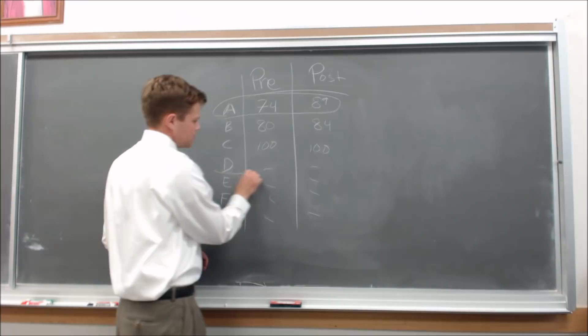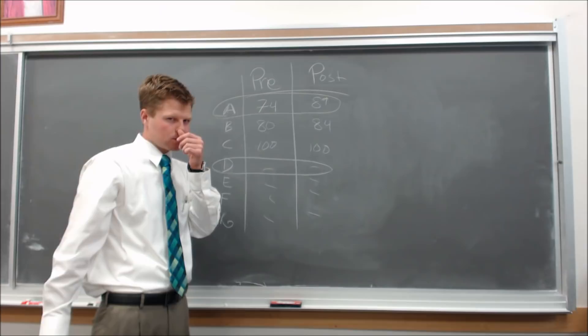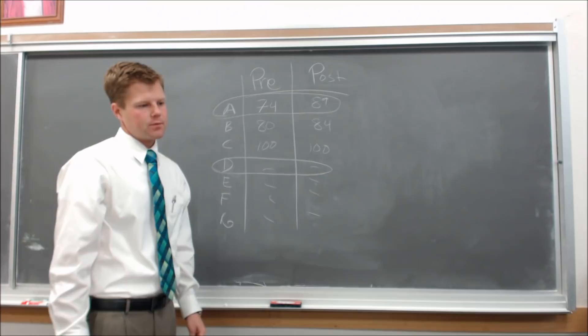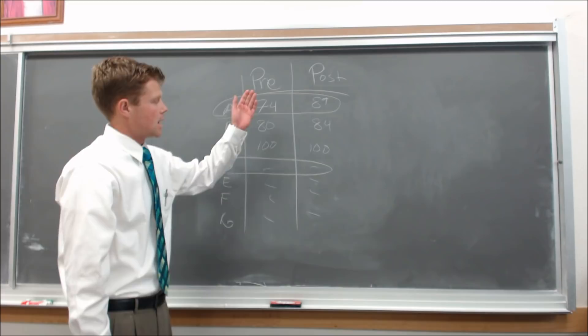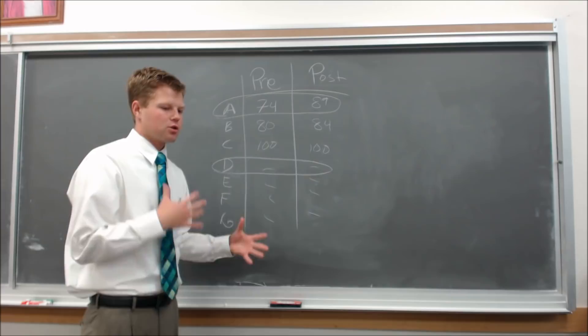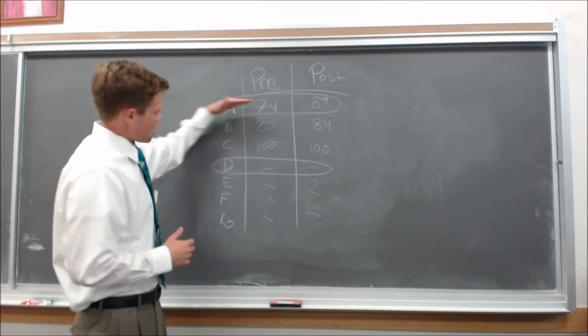It doesn't make sense to mix up the columns. That's how you know it's a matched pair. It could be for pre-test/post-test, before and after, or even husband and wife — maybe comparing IQs of husband and wife, or where they live. Each row is connected.